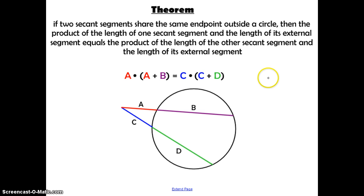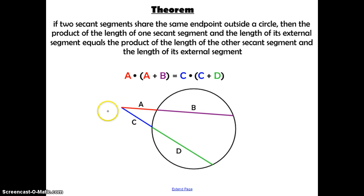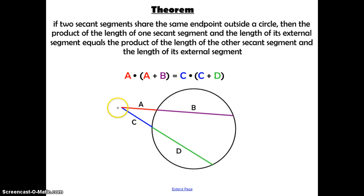This theorem says: if two secant segments share the same endpoint outside a circle, then the product of the length of one secant segment and its external segment equals the product of the length of the other secant segment and its external segment. A short way to remember this: the short part on the outside times the whole thing equals the short part on the outside times the whole thing. Using the formula: A times (A plus B) equals C times (C plus D).